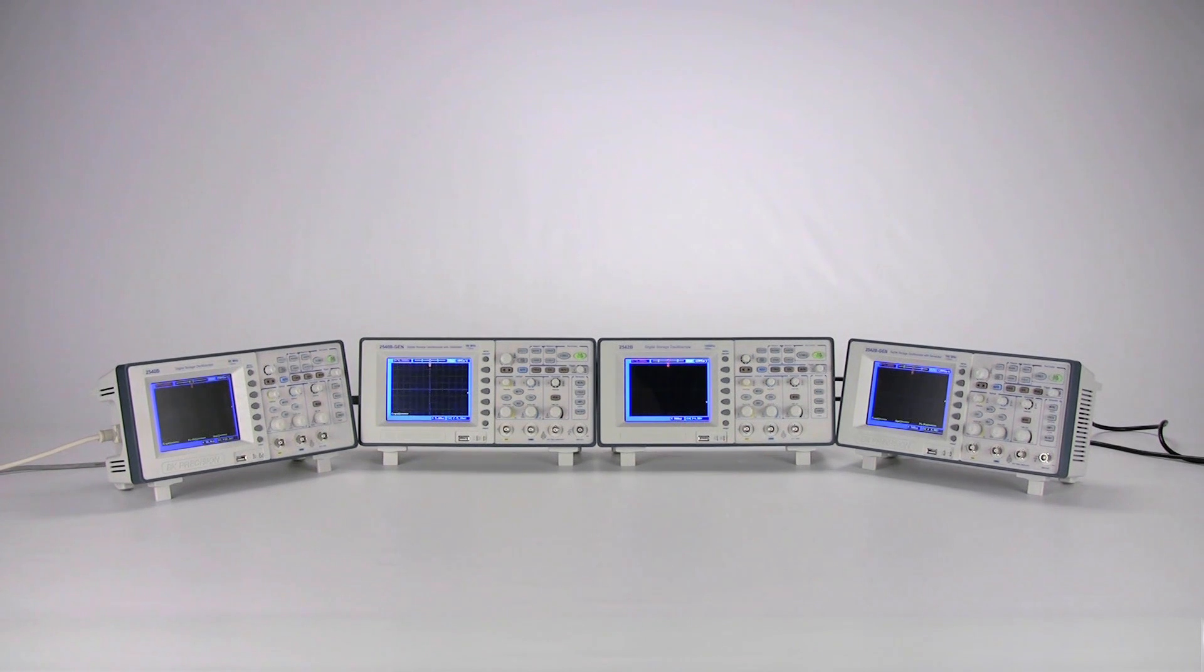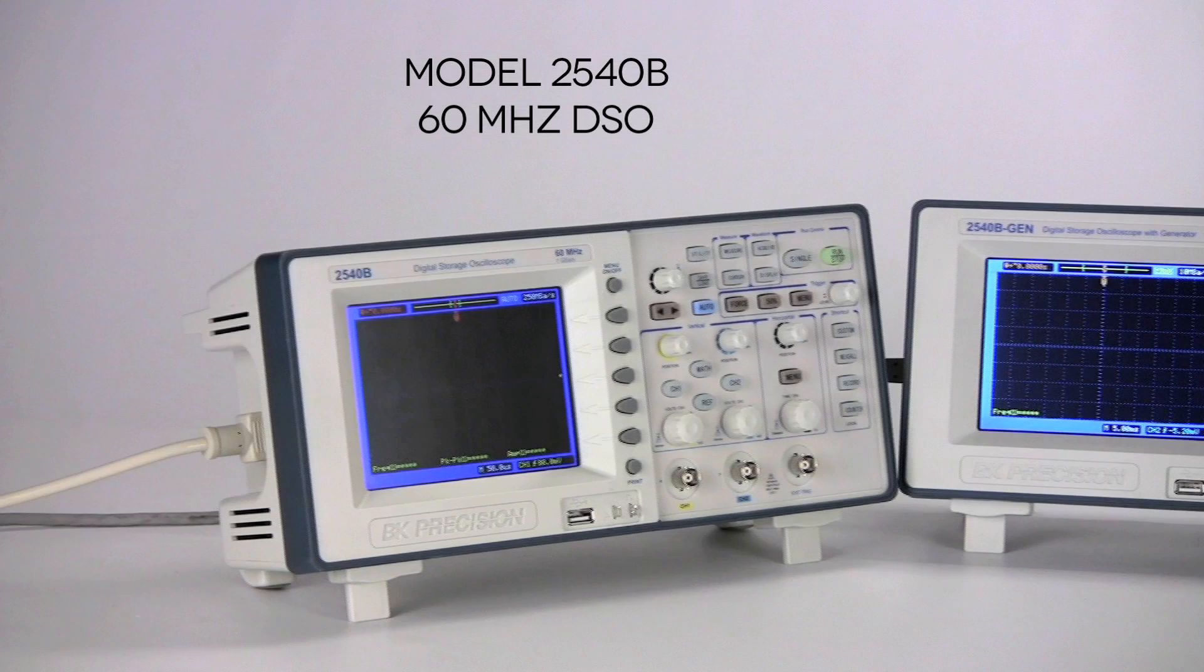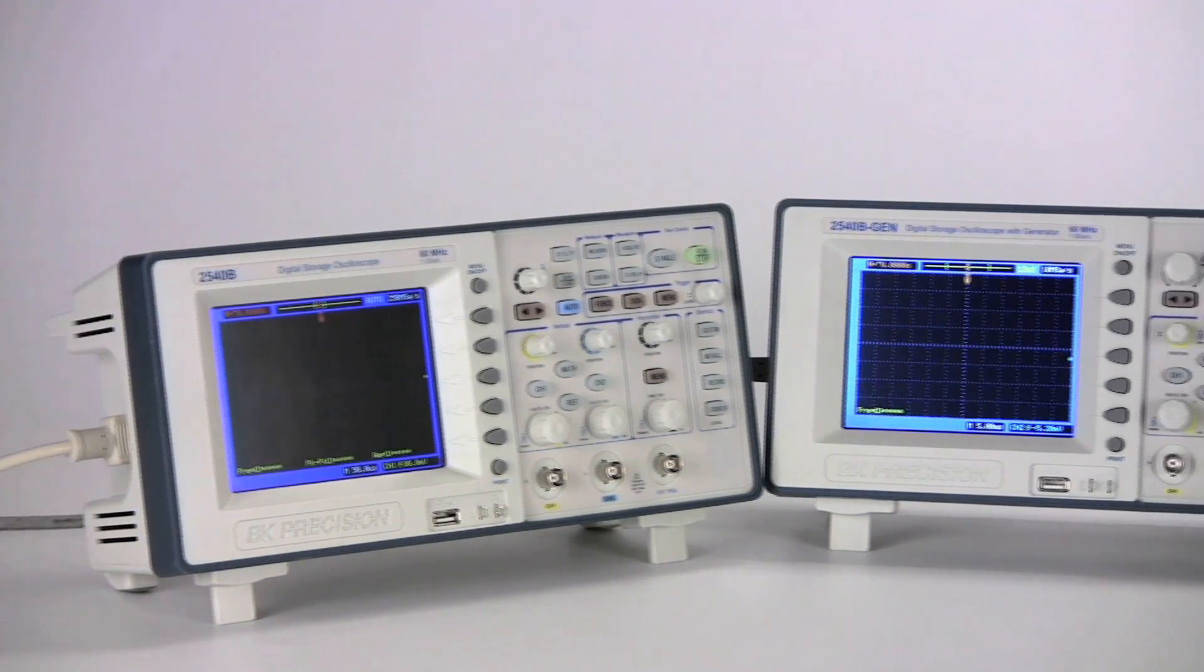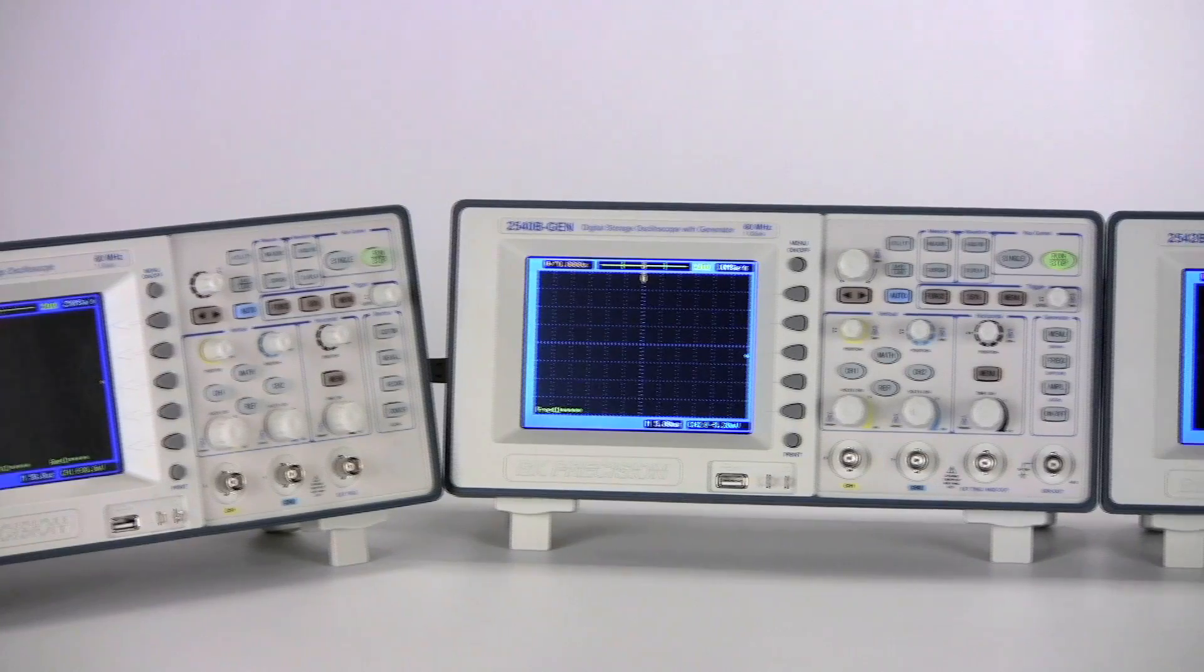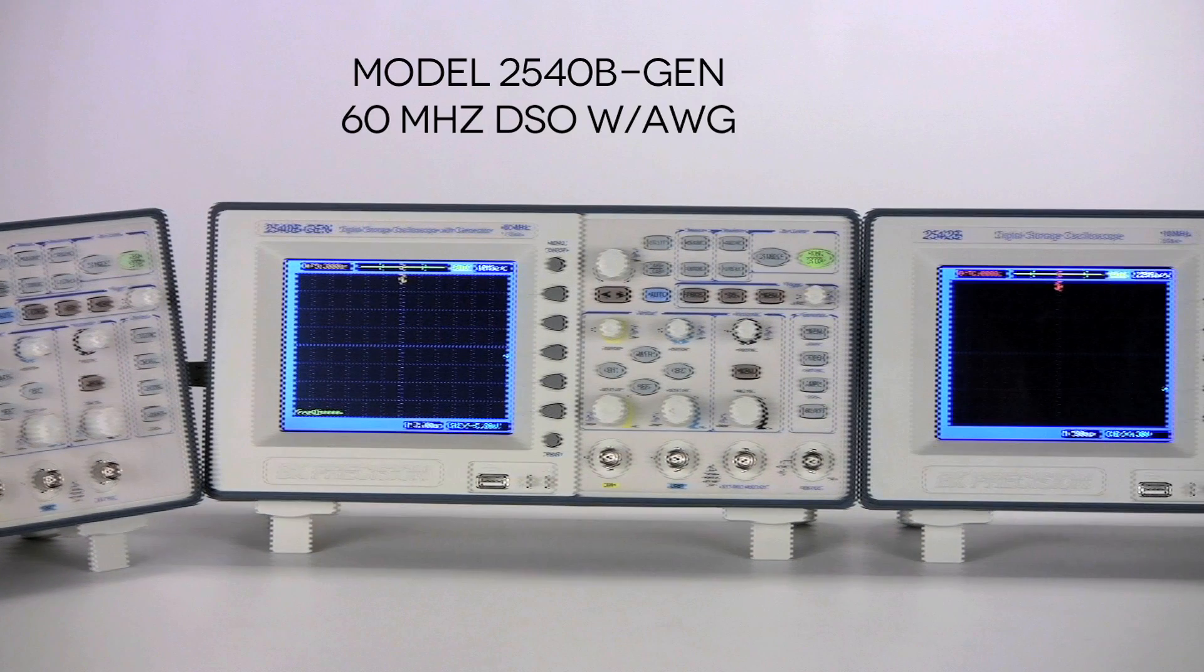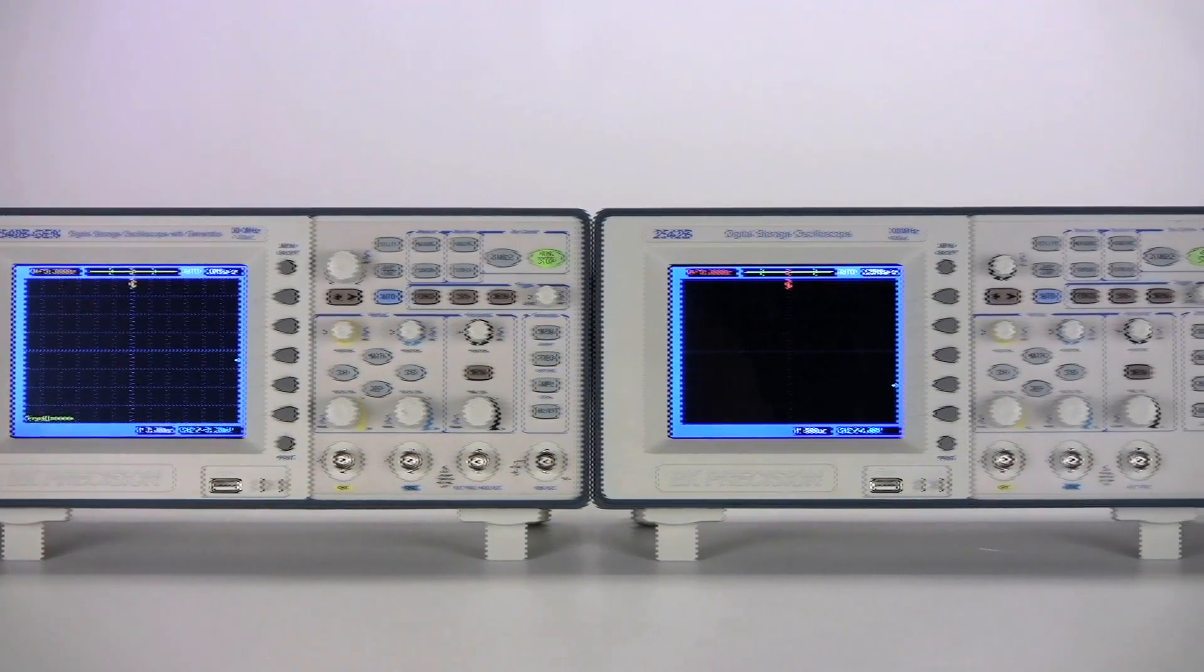Here are B&K Precision's 2540B-series digital storage oscilloscopes. This series includes 60 and 100 MHz models with or without built-in arbitrary waveform generators.